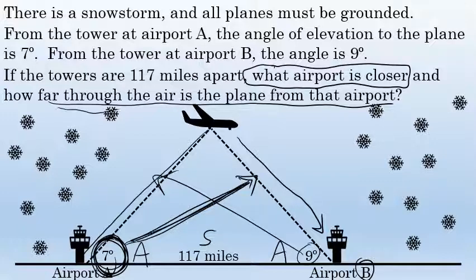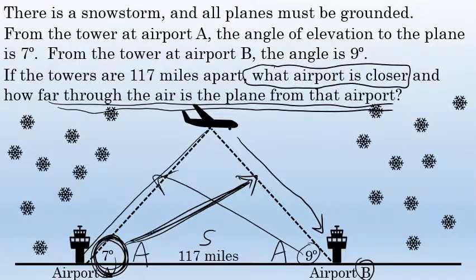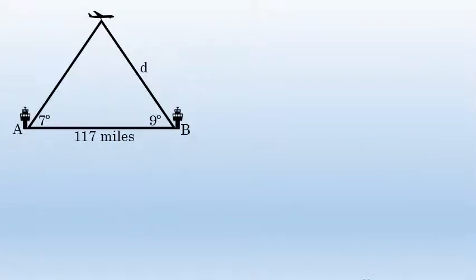To apply the Law of Sines, I need to know the angle opposite the 117-mile side. The Law of Sines requires at least one side and its opposite angle. Since the three angles in a triangle sum to 180 degrees, we can find the angle below the airplane by subtracting from 180.